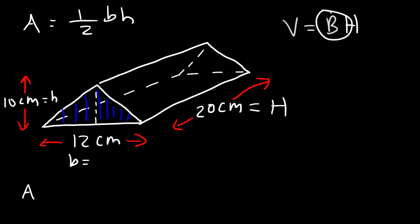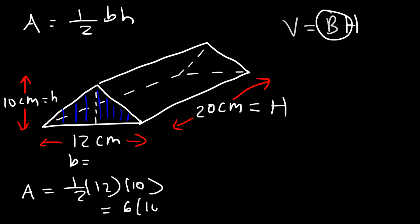So in this case it's going to be 1 half, the base is 12 and the height is 10. Half of 12 is 6, and 6 times 10 is 60. So the area is 60 square centimeters — that's the area of the base.